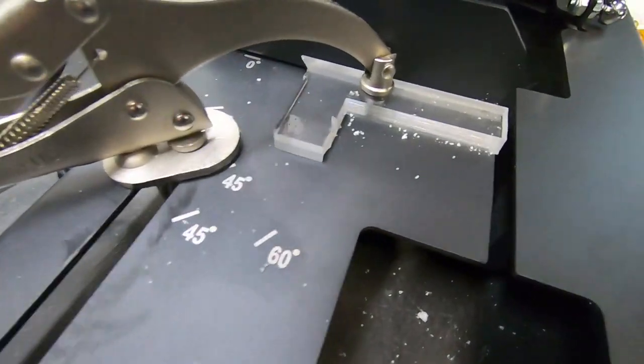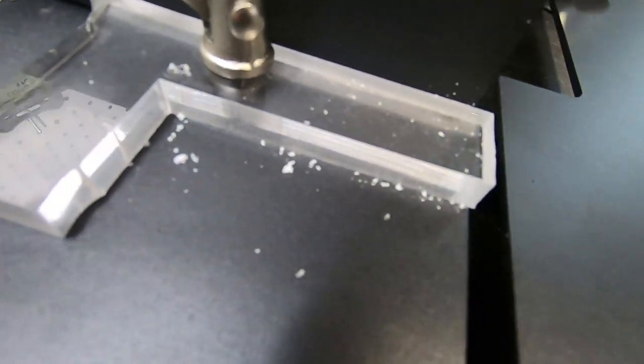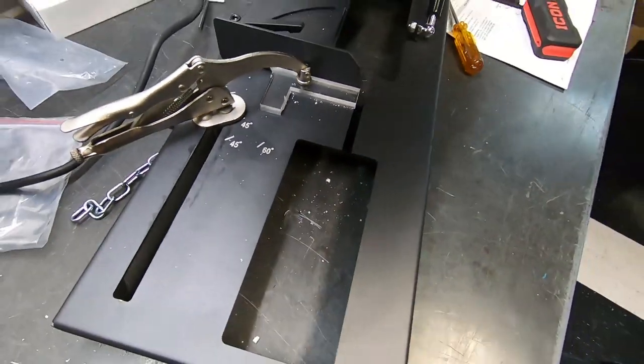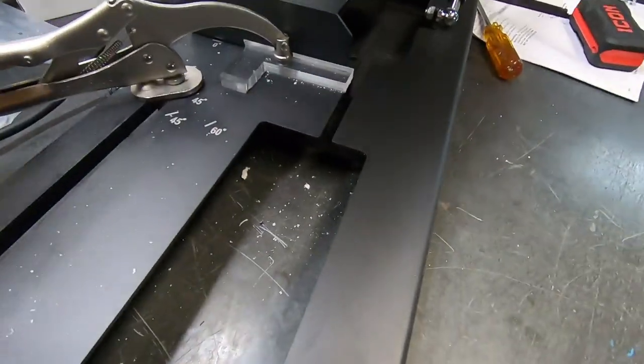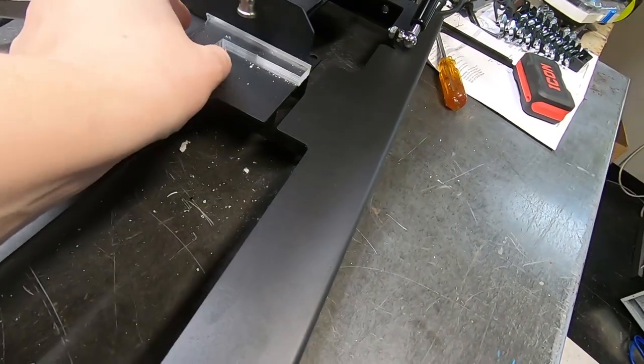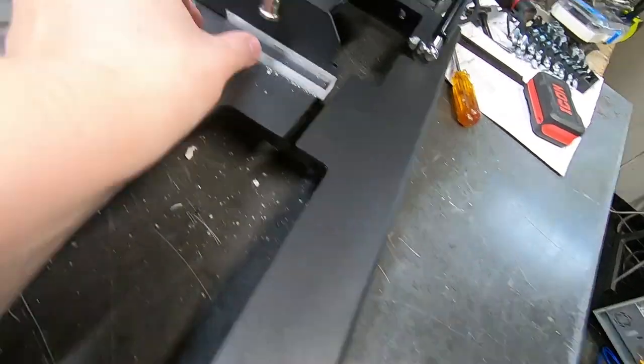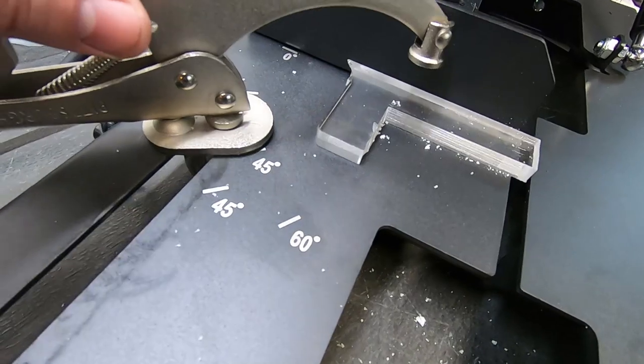After I got everything adjusted, I did a few test cuts. This is just a test cut in acrylic to see how well that would do. And as you might expect, it just cut through it like butter. But I wanted to see how square it was, and as it turns out, I got it pretty square.